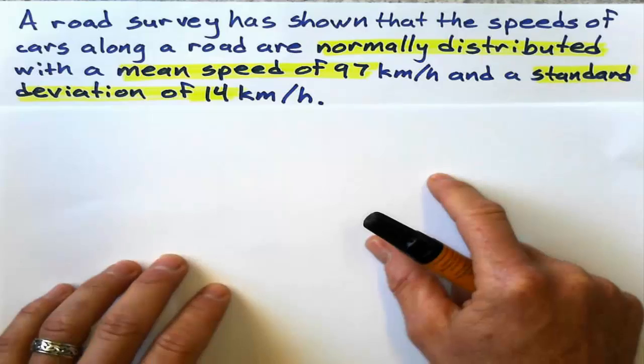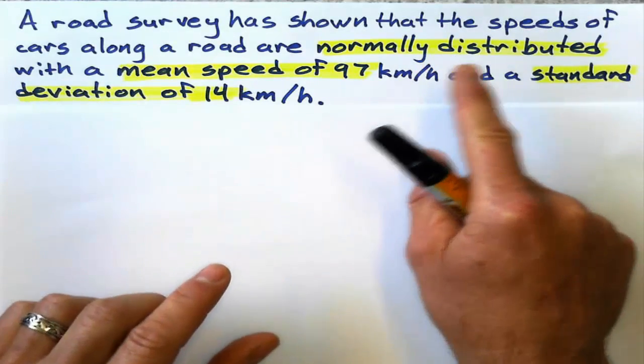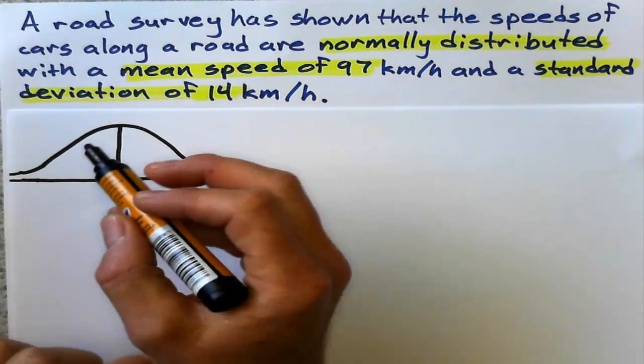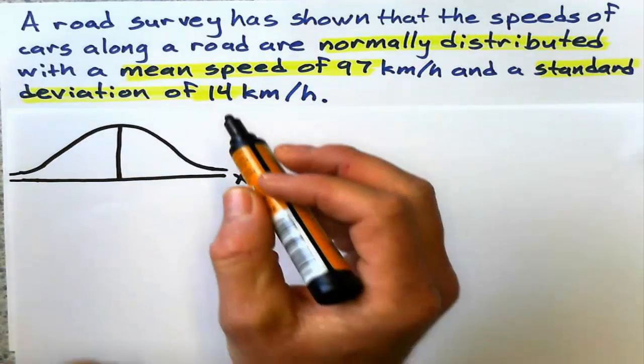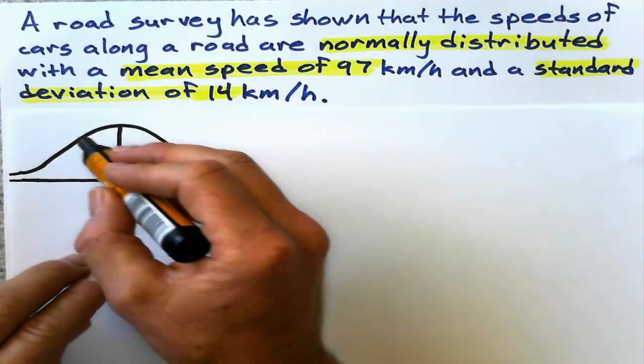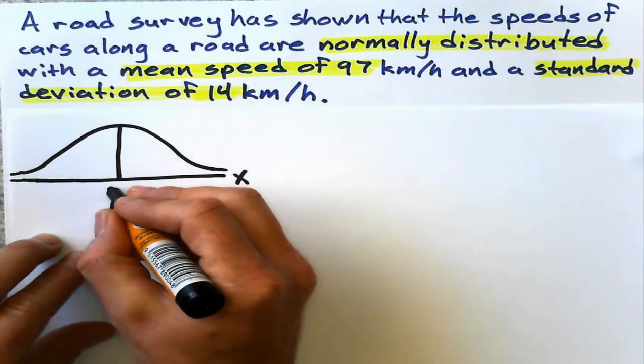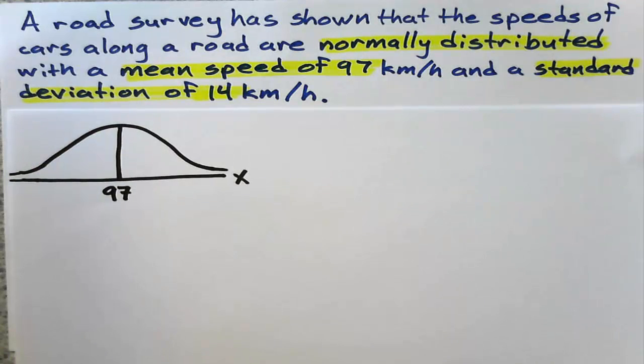I've highlighted the important parts. Let's draw a picture of what this means, starting with normally distributed. Normally distributed means that the data is going to follow a bell-shaped curve, and the top of the curve is where the mean is. In this case, that's 97, so most cars travel around 97 kilometers an hour.